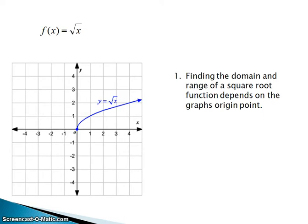To find the domain and range of a square root function, you have to determine the point of origin — in other words, we're looking for the coordinate where it starts. You can see that in this case it starts at (0, 0). It's the parent function, so it makes sense that it would start at the origin.